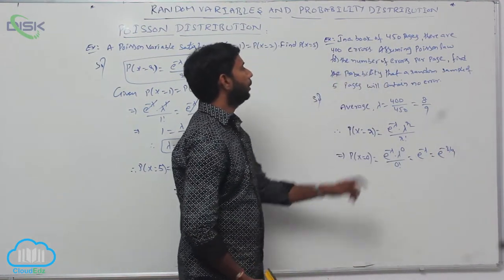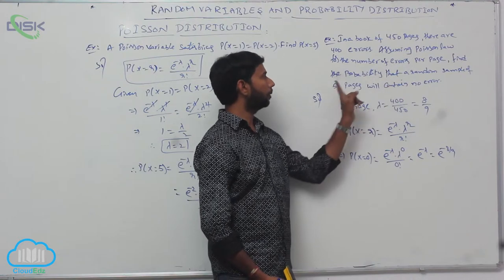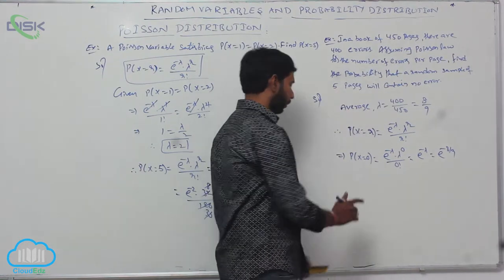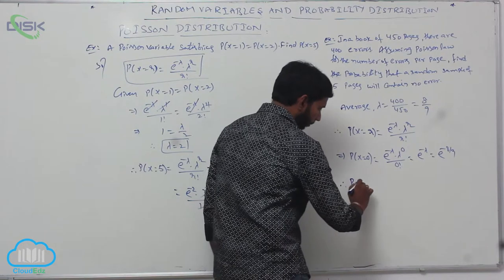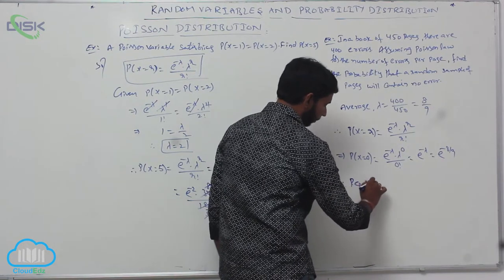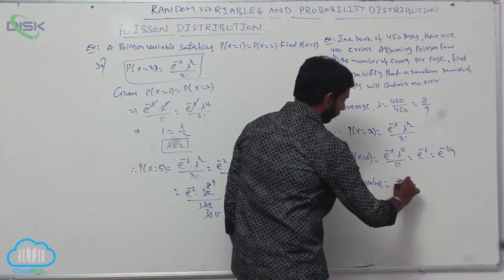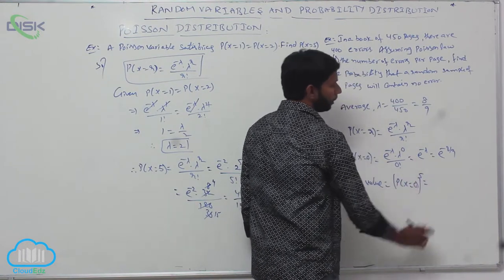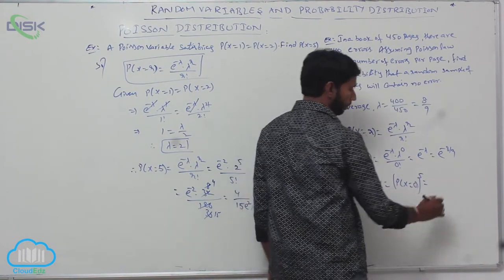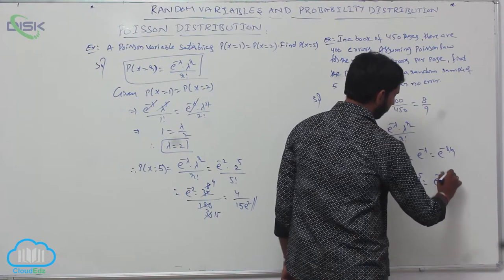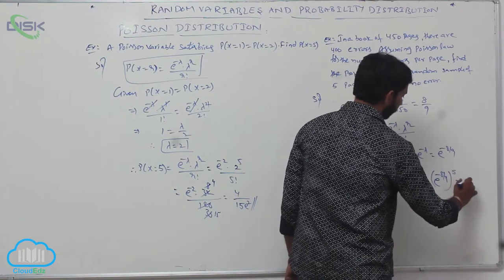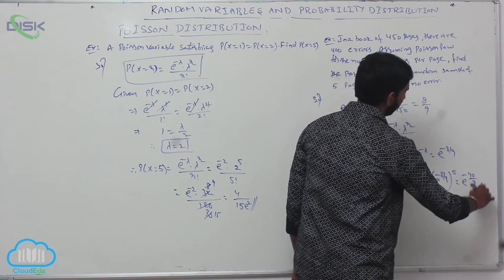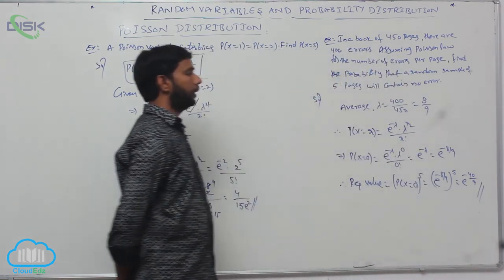The probability that a random sample of 5 pages contains no error is P(x=0) whole power 5. The experiment is repeated 5 times, that is e power minus 8 by 9, whole power 5, equal to e power minus 40 by 9.